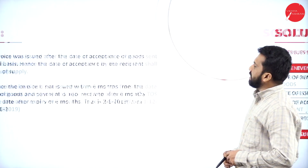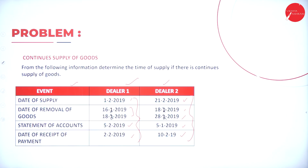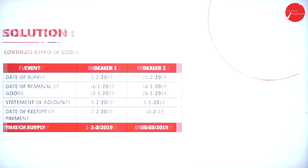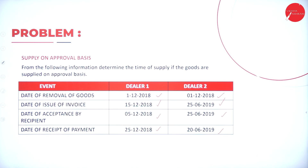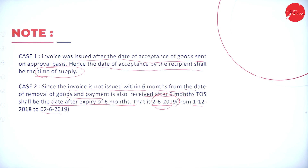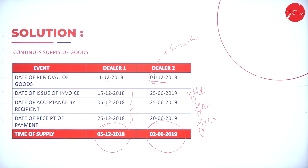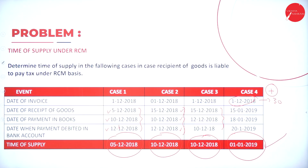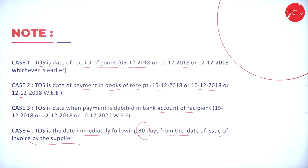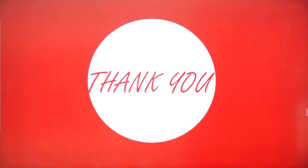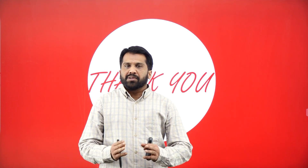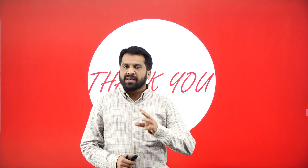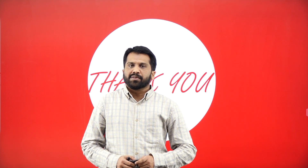I'll recap all the slides — please take a screenshot. Problem 1 was continuous supply with its answer. Problem 2 was supply on approval basis with notes and solution. Problem 3 was time of supply under RCM with its solution and notes. This is all about today's session. Hope you understood what is approval basis, continuous supply, and RCM. Please work out these problems — they are more than sufficient for the time of supply topic. Thank you.